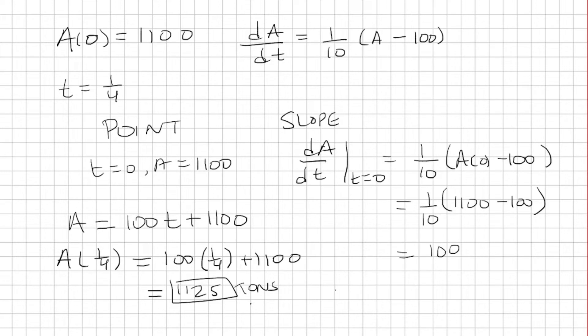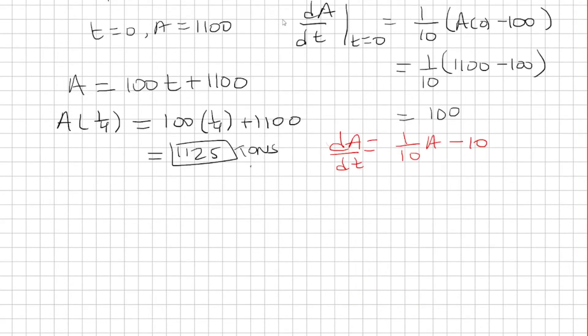Okay, so we'll use this equation, dA over dt. A is equal to 1 over 10 A minus 10. I just distributed the 1 over 10. So now I'll take the second derivative. So this will be d squared A over dt squared. The derivative of A is dA over dt. Which dA over dt is what we started with.